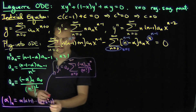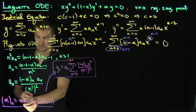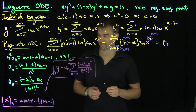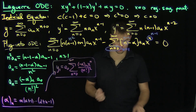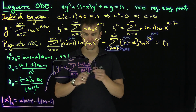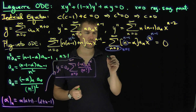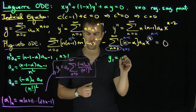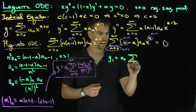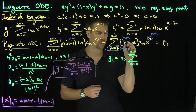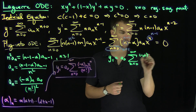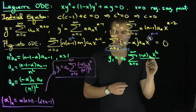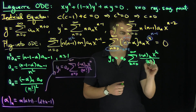Now, since we have a negative alpha, we can actually get this series to terminate. Let's change to dummy index k: y1 equals a_0 times the sum from k equals 0 to infinity of negative alpha ascending factorial k, times x to the k over k factorial squared. What happens if we choose alpha equal to n, a natural number?